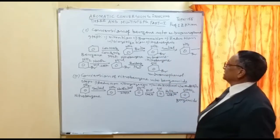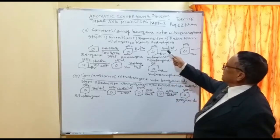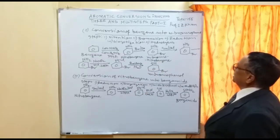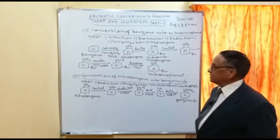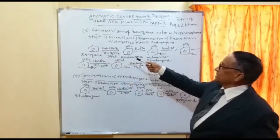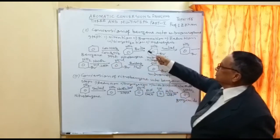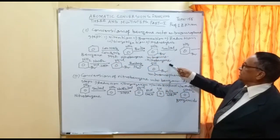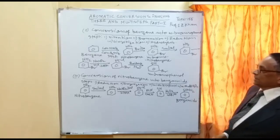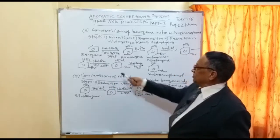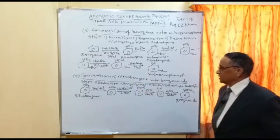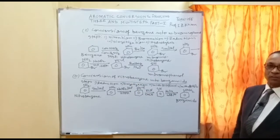Then diazotization is carried out with NaNO₂ and HCl, and step five is hydrolysis — when treated with water you get meta-bromophenol. So: benzene → nitrobenzene (nitration) → meta-bromonitrobenzene (bromination) → amino derivative with Sn/HCl → diazonium salt (NaNO₂/HCl) → meta-bromophenol (hydrolysis by boiling with water).